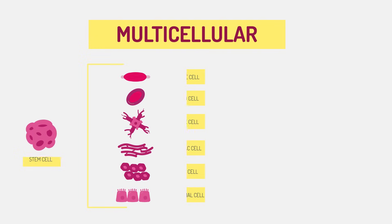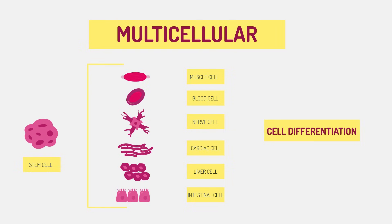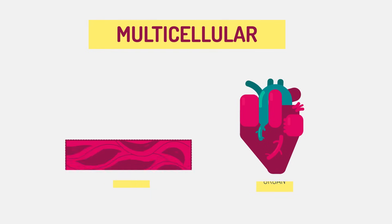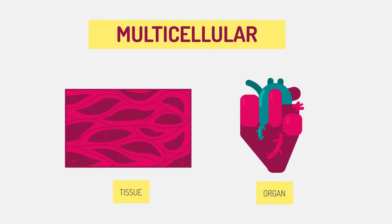Being multicellular allows organisms to be larger and have cell differentiation — so different types of cells to carry out different tasks.